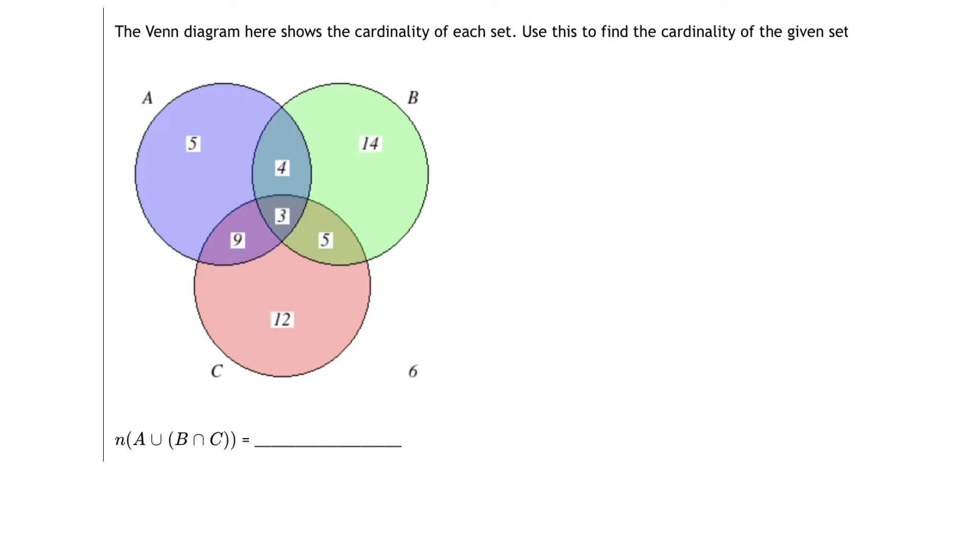The Venn diagram here shows the cardinality of each set. Use this to find the number of elements in the union of A with B intersect C.